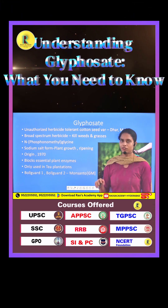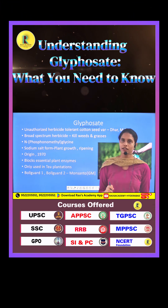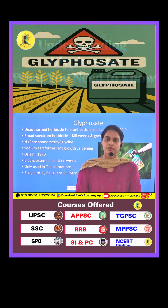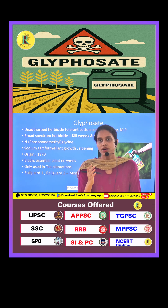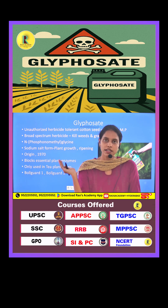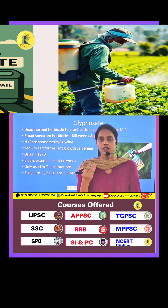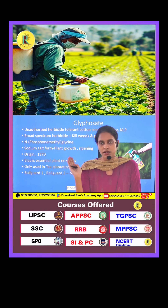Glyphosate is a herbicide that has been continuously used in the bar district of Madhya Pradesh. The reason for its use is the presence of unauthorized herbicide-tolerant cotton varieties which are resistant to it. In this context, let's understand more about this particular glyphosate herbicide and the cotton crop.